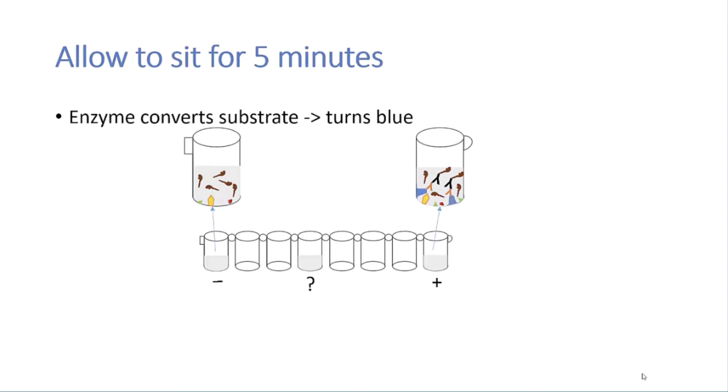In the negative control, the substrate should not turn blue because there was no antigen and therefore no enzyme. In the positive control, where the antigen is present, the substrate does turn blue. You can then compare the sample that you're interested in with the negative control and the positive control. If your sample does not turn blue, it is considered negative. If it does turn blue, it is considered positive.